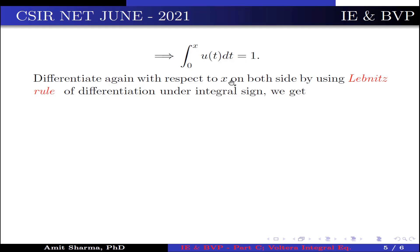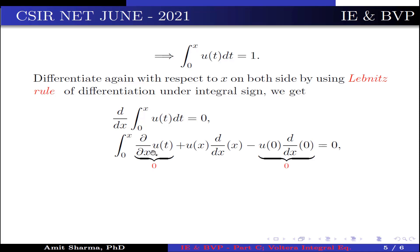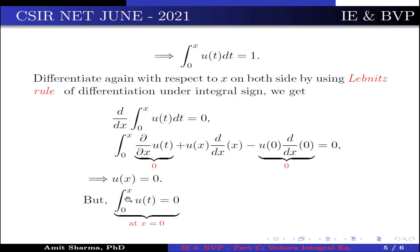Differentiating again with respect to x using the Leibniz rule, d/dx of ∫[0 to x] u(t) dt = 0. Applying the rule gives u(x)·(dx/dx) − u(0)·0 = 0. Since ∂/∂x of u(t) has no x-dependence and the derivative of 0 is 0, we get u(x) = 0. However, substituting x = 0 in ∫[0 to x] u(t) dt = 1 gives 0 = 1, which is a contradiction.